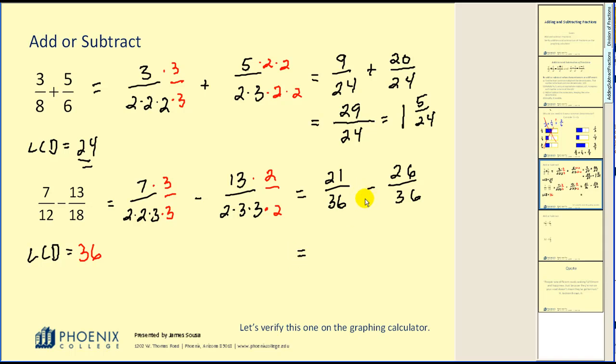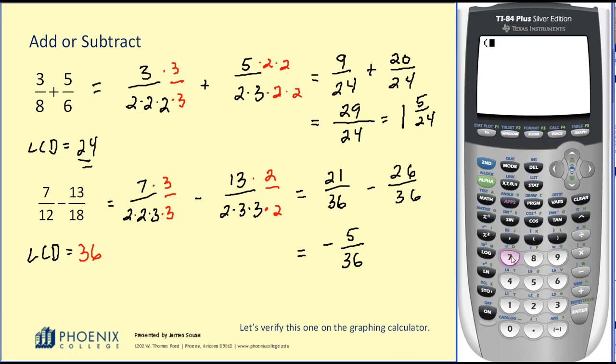So we have twenty-one thirty-sixths minus twenty-six thirty-sixths. Okay, now this difference is a negative value. Twenty-one minus twenty-six would be a negative five with a denominator of thirty-six. Let's go ahead and verify this one on the graphing calculator. I'm going to enter in seven-twelfths in a set of parentheses. And then I will subtract thirteen-eighteenths. Again, this will give me the decimal value. But if I hit math, enter, enter, it will convert it back to a fraction for me. That verifies all of our hard work.